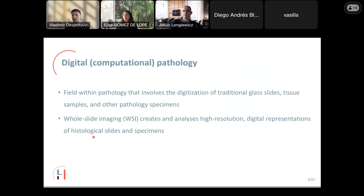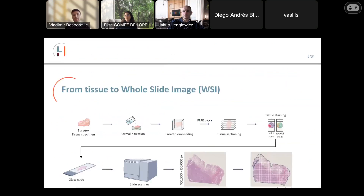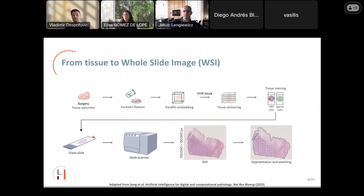Digital or computational pathology is a specialist field involving the digitization of traditional glass slide tissue samples and pathology specimens. Advanced imaging techniques such as whole slide imaging are used to create extremely high-resolution digital representations of histological slides. The process goes from taking tissue specimens — human or animal, usually during surgery — to fixing them to preserve tissue characteristics, then embedding in paraffin to obtain so-called FFPE blocks (Formalin Fixed Paraffin Embedded), which are sliced into very thin sections of several micrometers thickness.